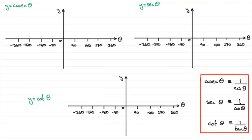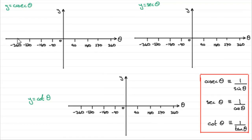So how do we go about sketching y equals cosec theta? Well, like all of these graphs, what you could do is draw up a table of values from minus 360 to 360 degrees and use your calculator. But that's not the point I really want to put across here. I want to show you how you can sketch them based purely on knowing the sine, cosine, and tan graphs. So we'll start with y equals cosec theta.